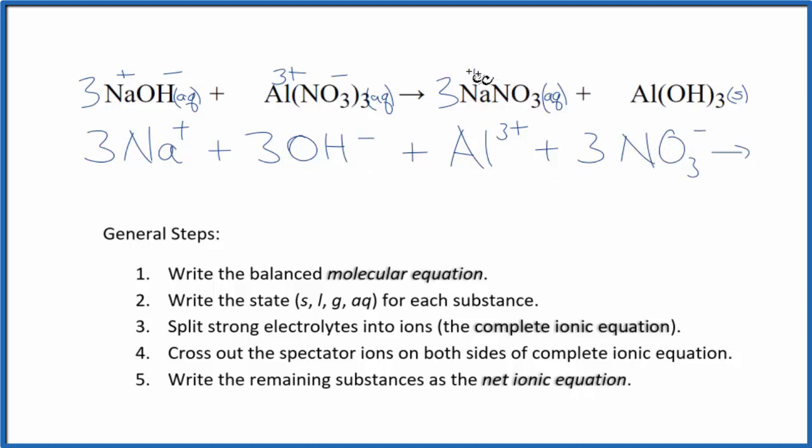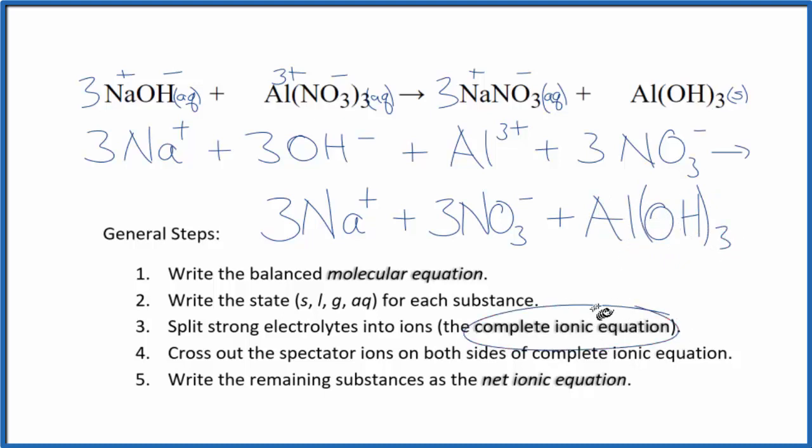For the product, we have a positive and a negative here. So three sodium ions. And then three nitrate ions. And then the aluminum hydroxide, since that's a solid, we don't split solids apart in net ionic equations. We'll have Al(OH)3. That's our aluminum hydroxide. This is our complete ionic equation.